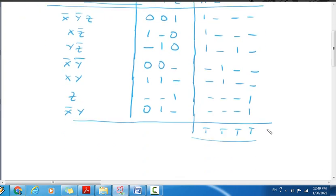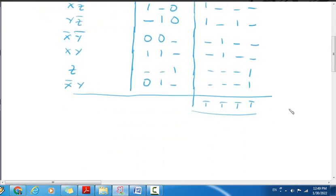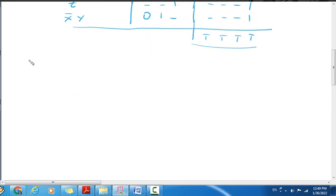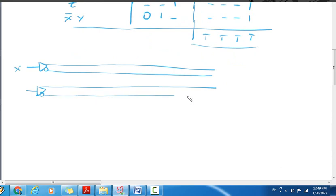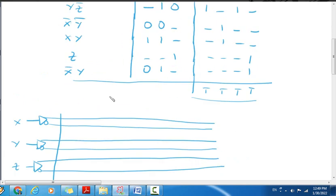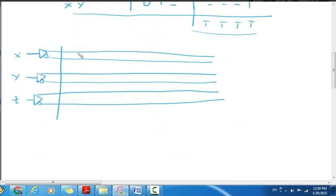From the PLA table, we implement the circuit. We have normal form and complement form. The product terms connect to AND gates, which connect to the OR gates for outputs.